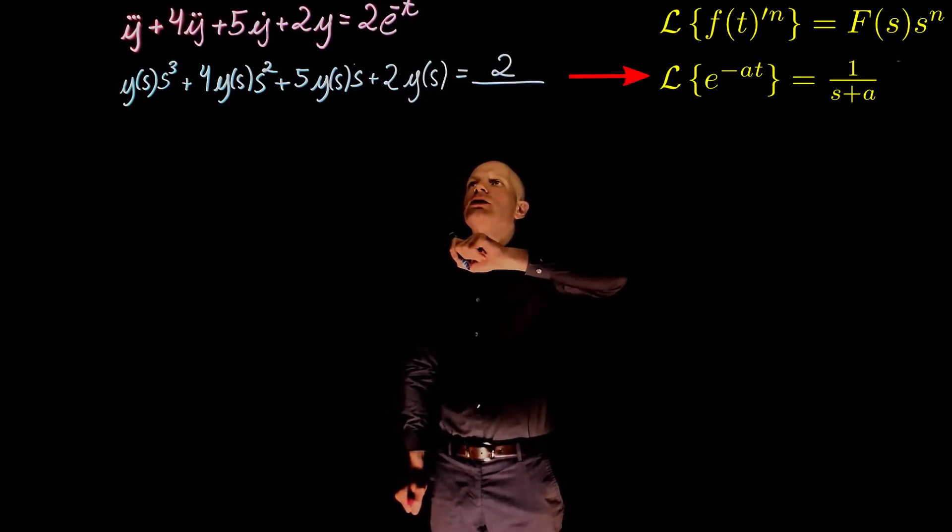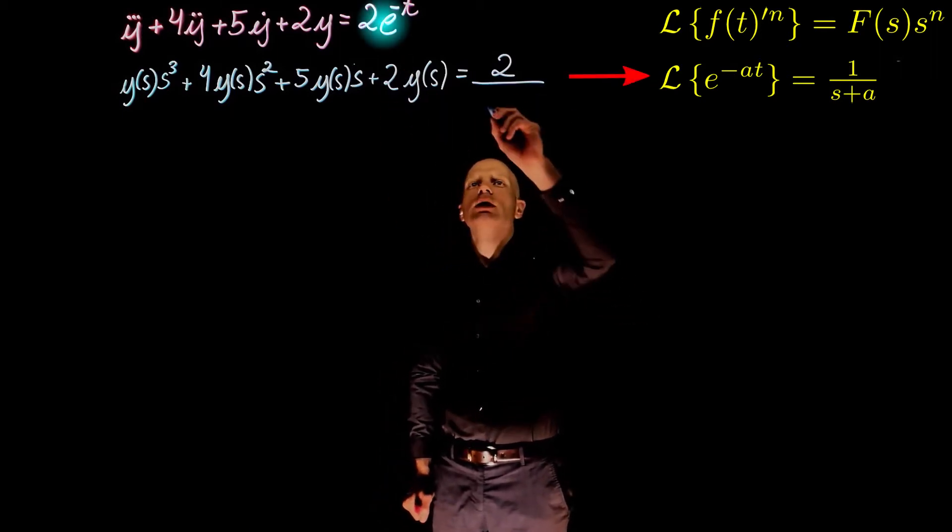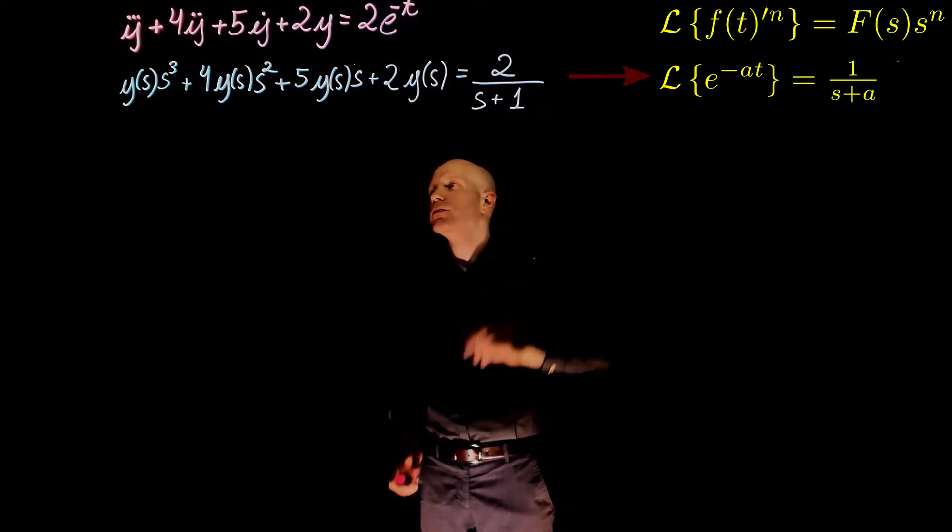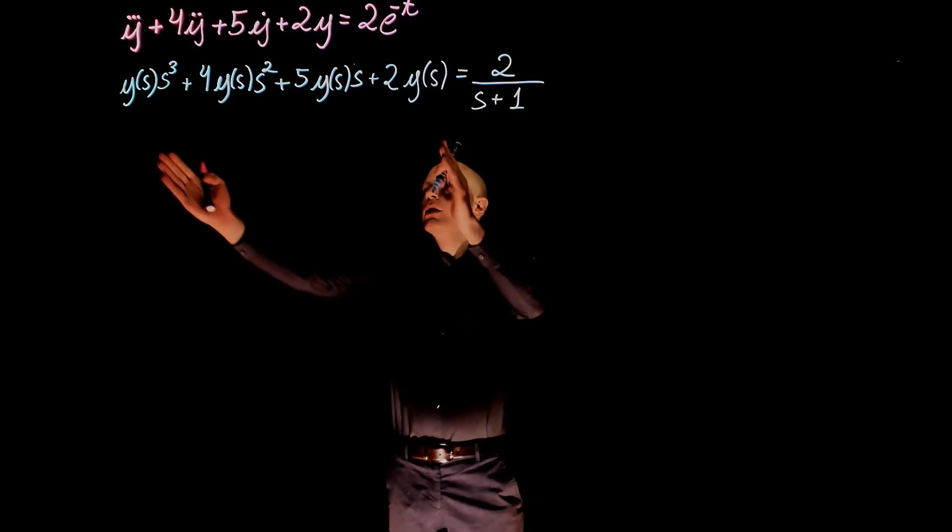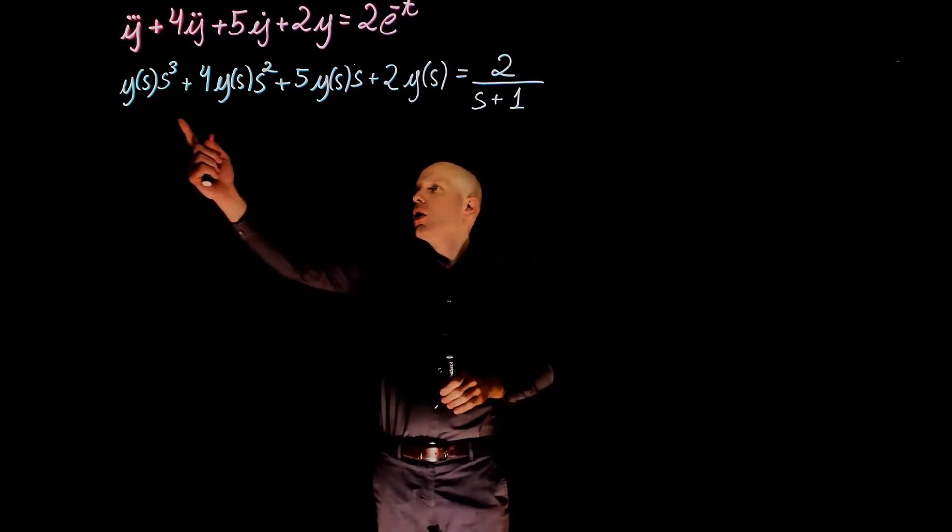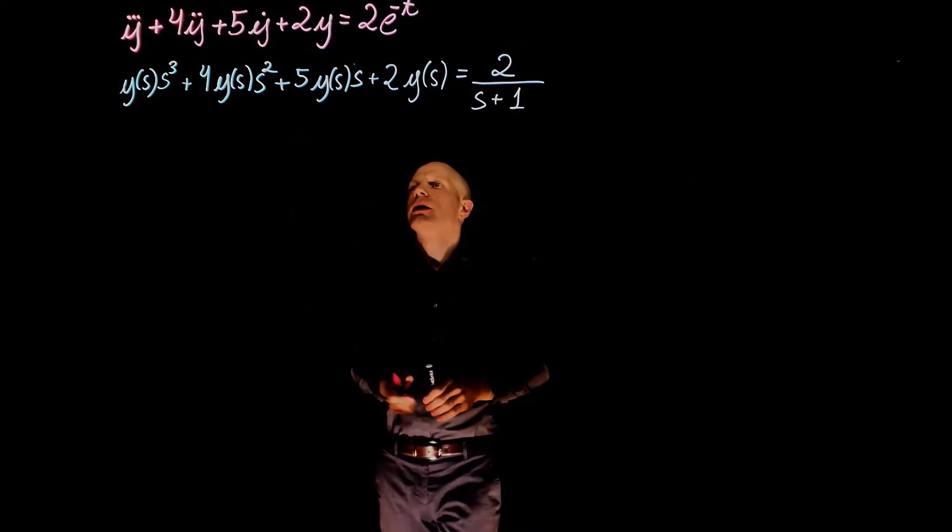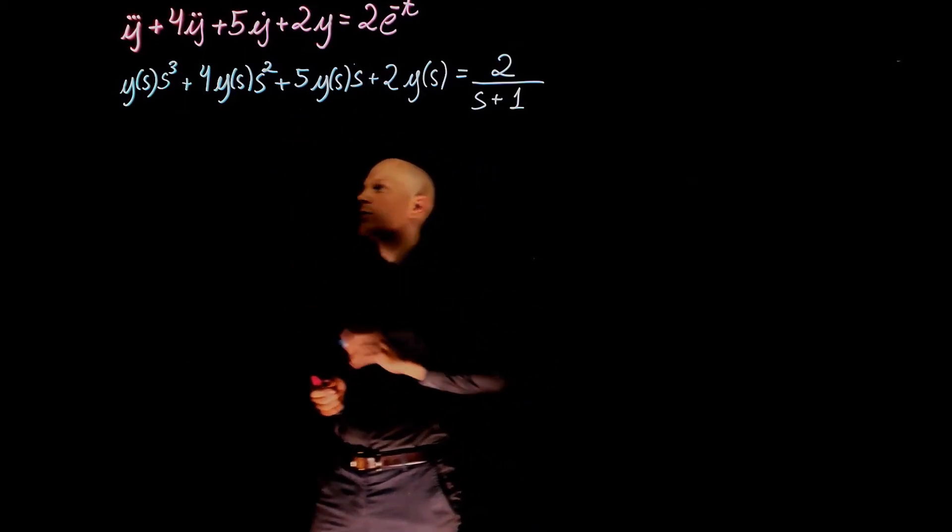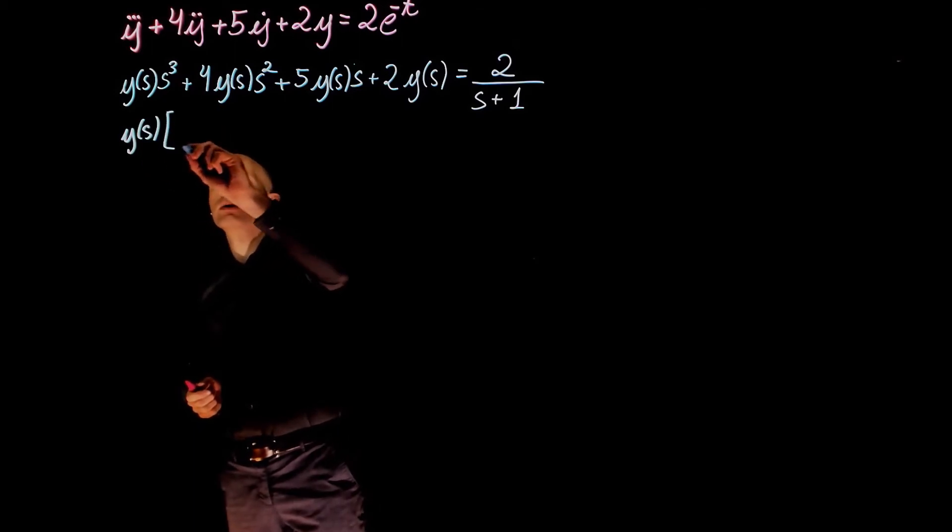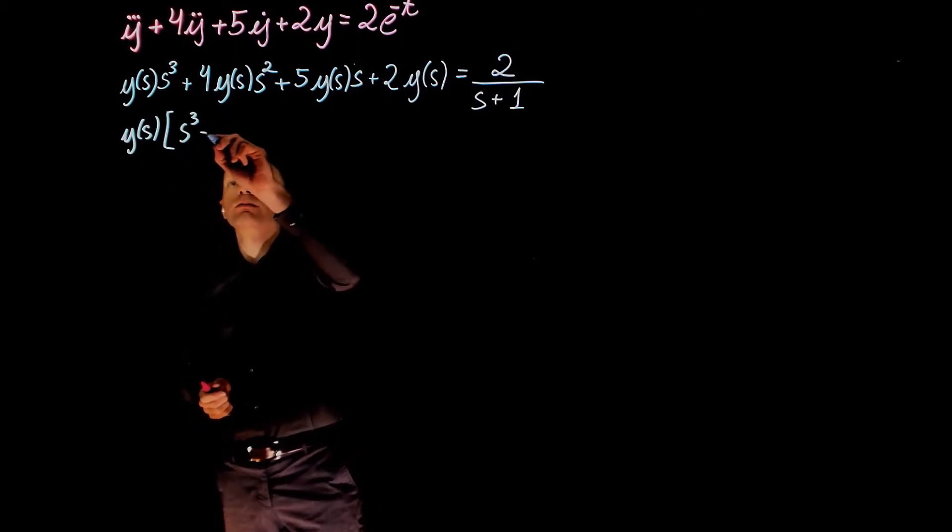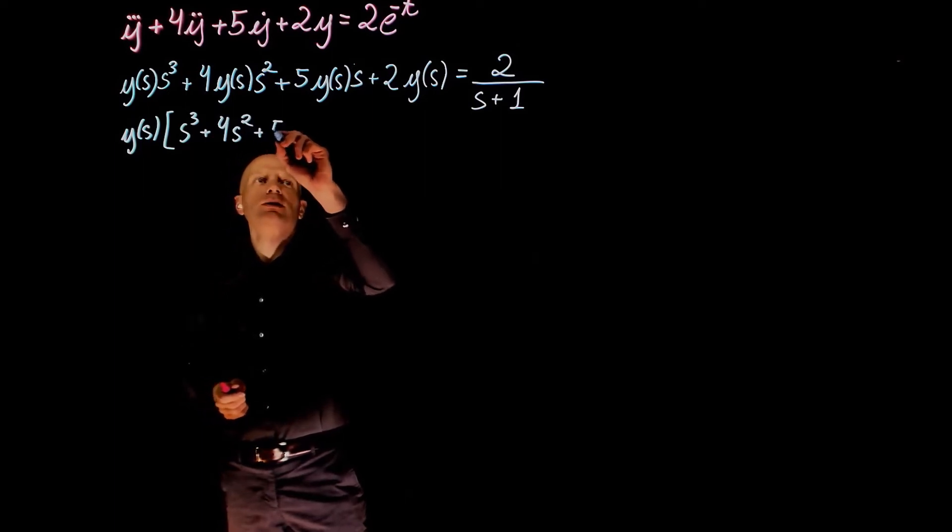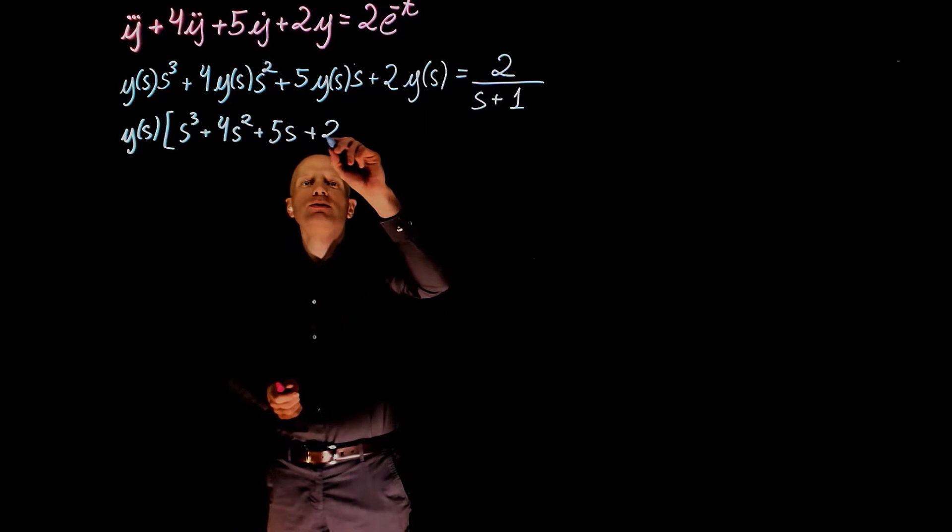The Laplace transform of exponential of negative t is 1 over s plus 1. If we now look at this big polynomial here, all terms are multiplied by y(s). We can factor y(s). This will give s to the power of 3 plus 4s squared plus 5s plus 2.